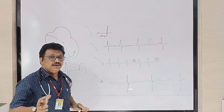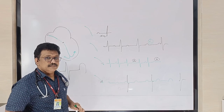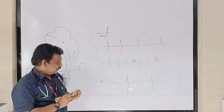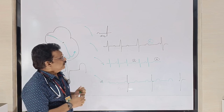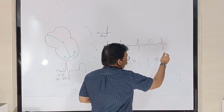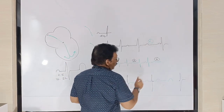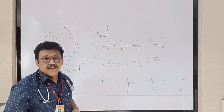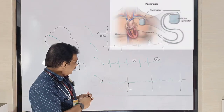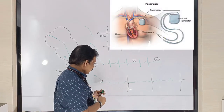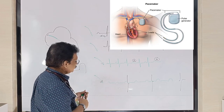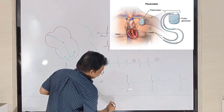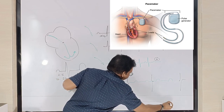If high grade second degree or third degree heart block is present, we have to pace the patient. If we don't pace the patient, they may go to complete cardiac arrest and you will see a flat line on the monitor.